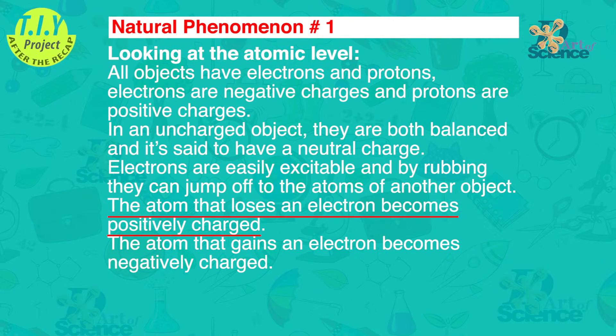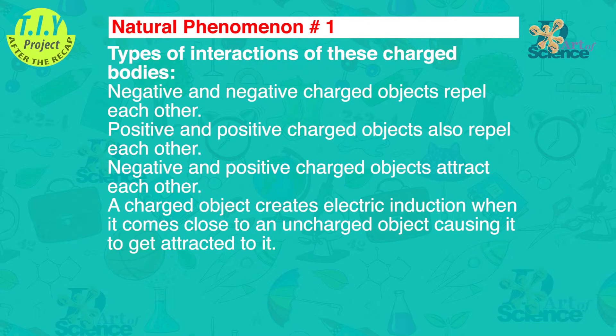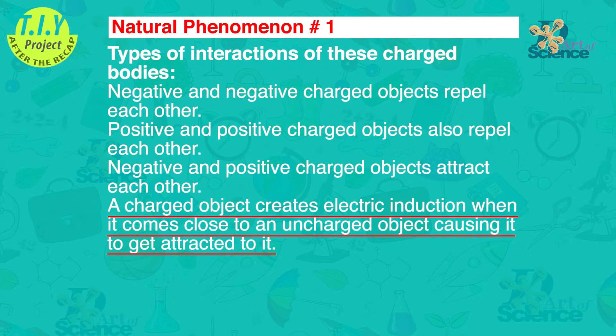The atom that loses an electron becomes positively charged. The atom that gains an electron becomes negatively charged. Types of interaction of these charged objects: negative and negative charged objects repel each other, positive and positive charged objects also repel each other, negative and positive charged objects will attract each other. A charged object creates electric induction when it comes close to an uncharged object, causing it to get attracted to it.